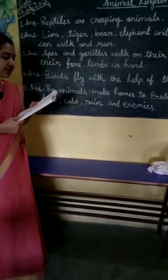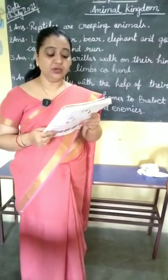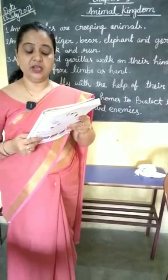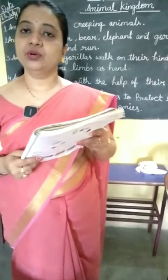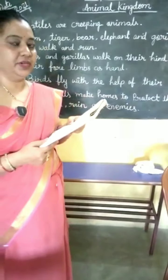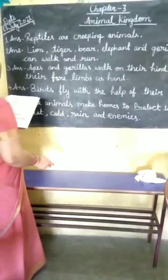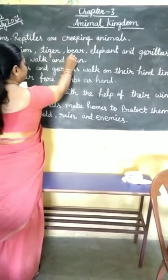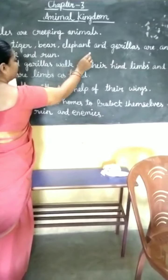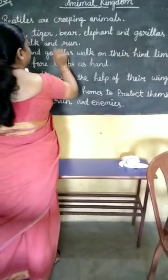Which animals can walk and run? There are many animals that can walk and run. Lion, tiger, bear, elephant, and gorillas are animals that can walk and run.